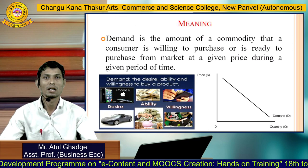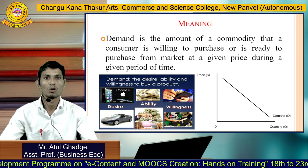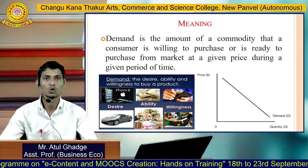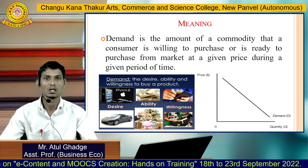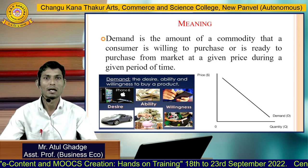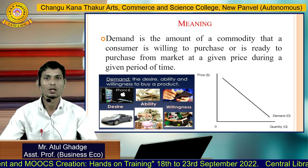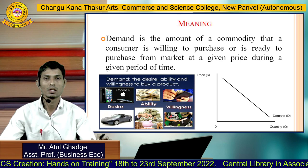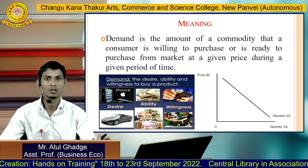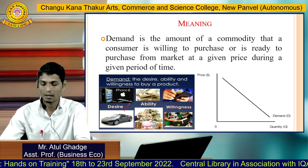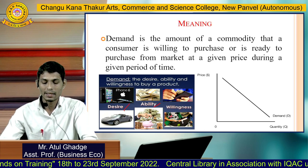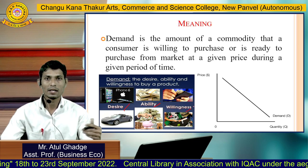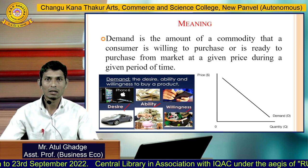So what is demand? Demand is the amount of a commodity that a consumer is willing to purchase or is ready to purchase from the market at a given price during a given period of time. Demand consists of three variables: desire, ability, and willingness. So if I desire for a commodity, is it called demand?